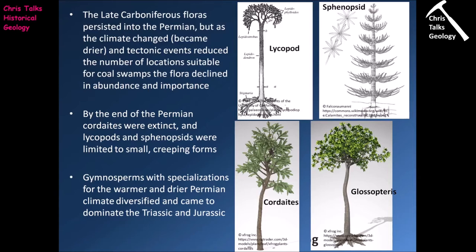By the end of the Permian, Cordaites had become extinct and the lycopods and sphenopsids were limited to small creeping forms — essentially replacing the tree-like versions tens of meters in height with the more modern-looking lycopods and sphenopsids that are typically tens of centimeters in height. Gymnosperms, which had specializations for warmer, drier conditions, began to diversify in the Permian and came to dominate the continental floras in the Triassic and Jurassic. By the Cretaceous the angiosperms — the flowering plants — appeared, and unfortunately the gymnosperms began to lose out a little.